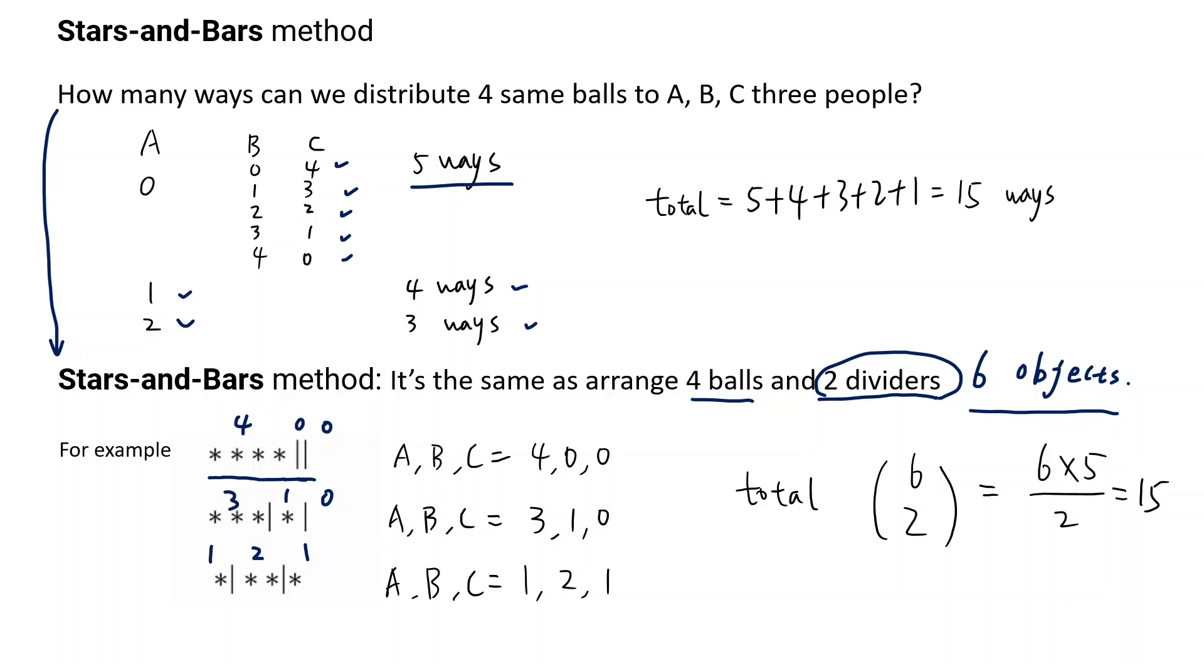When the number gets big, for example, we want to give 10 balls to four people. We need three dividers, so in total there are 13 objects. In those 13 places, we put three dividers. Choose three out of 13 will be the answer.